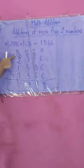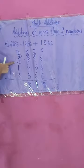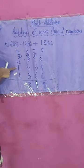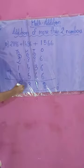Now we add the 1000's place: 1 plus 2 plus 1 plus 1. That is 1 plus 2 is 3, plus 1 is 4, plus 1 is 5.